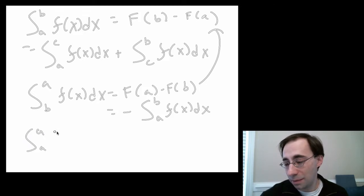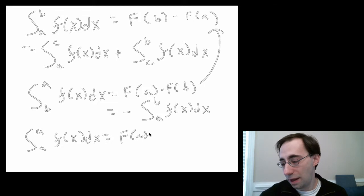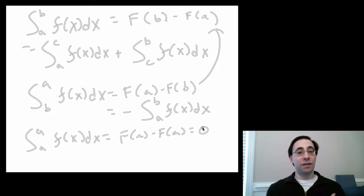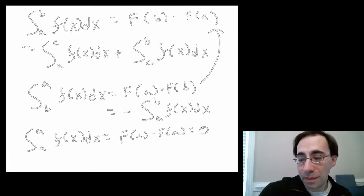Similarly, if the bounds are the same, and you go nowhere, you get F(A) minus F(A), and that's zero. So the integral around a single point is just zero. A single point has no actual area. That's most of the things with bounds.